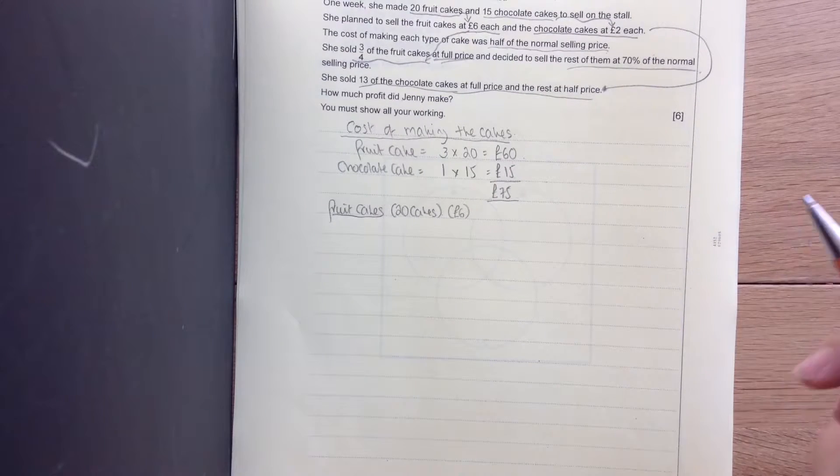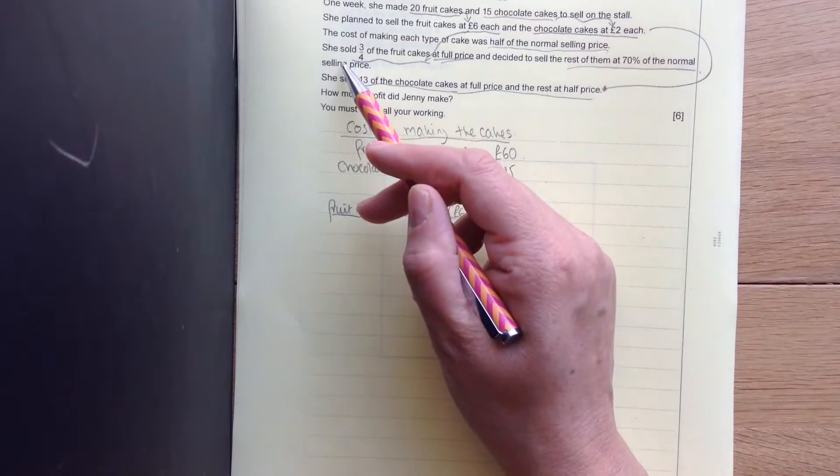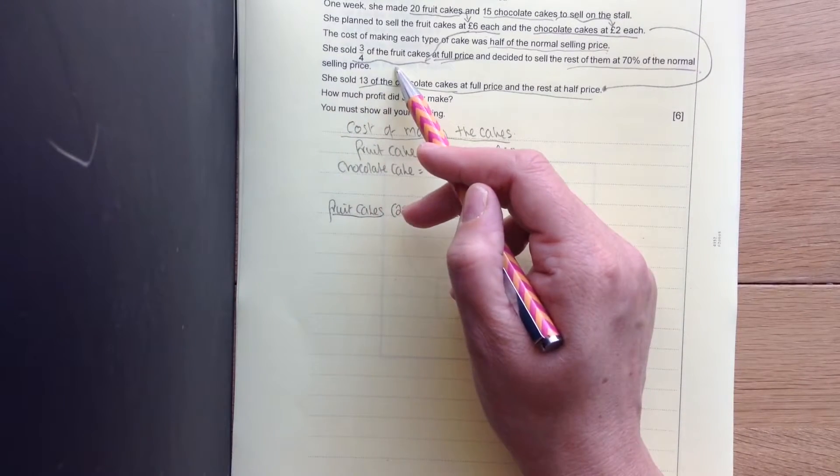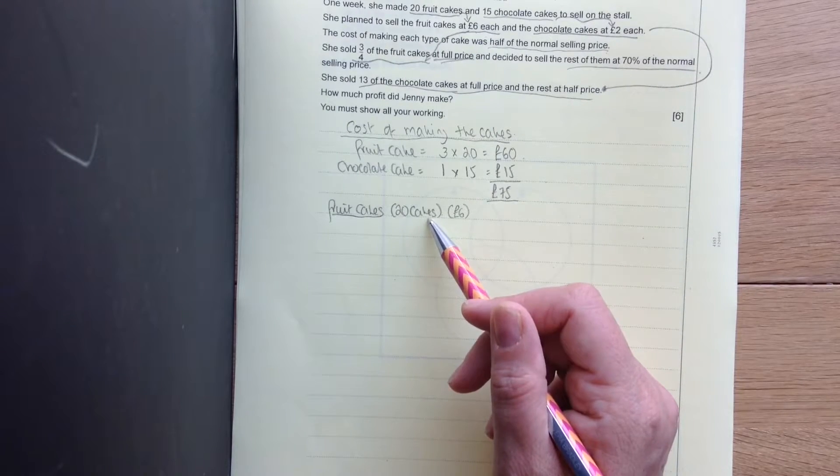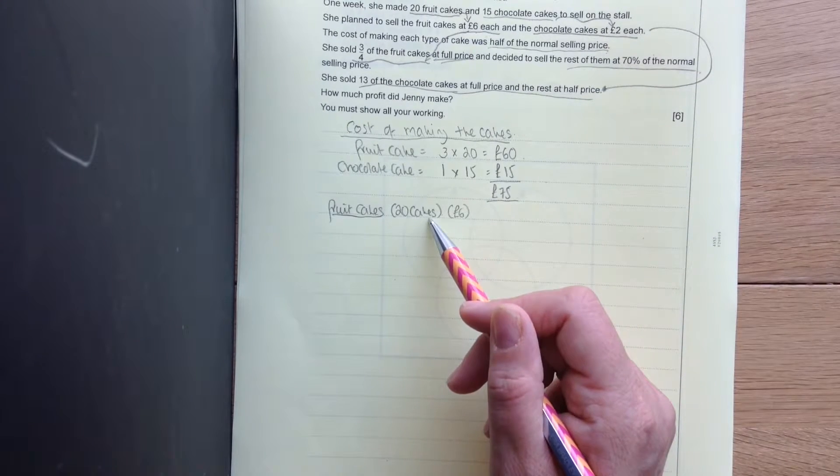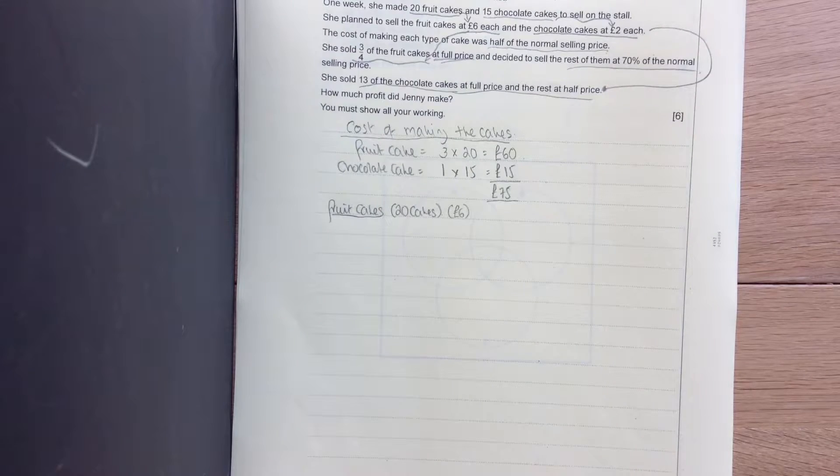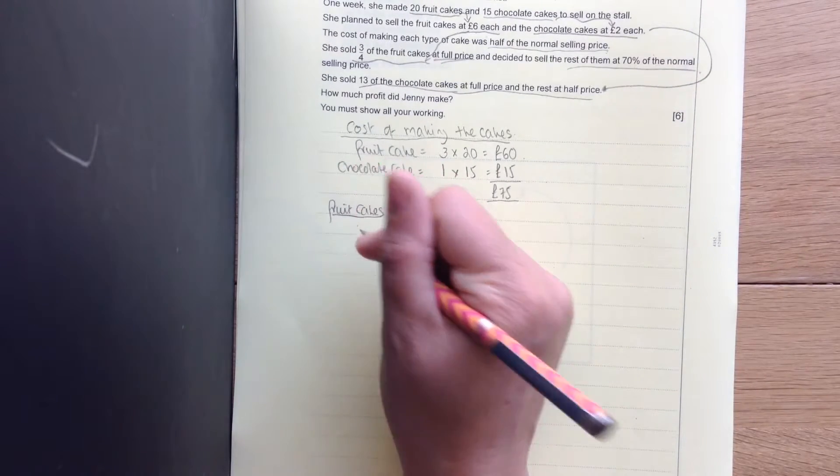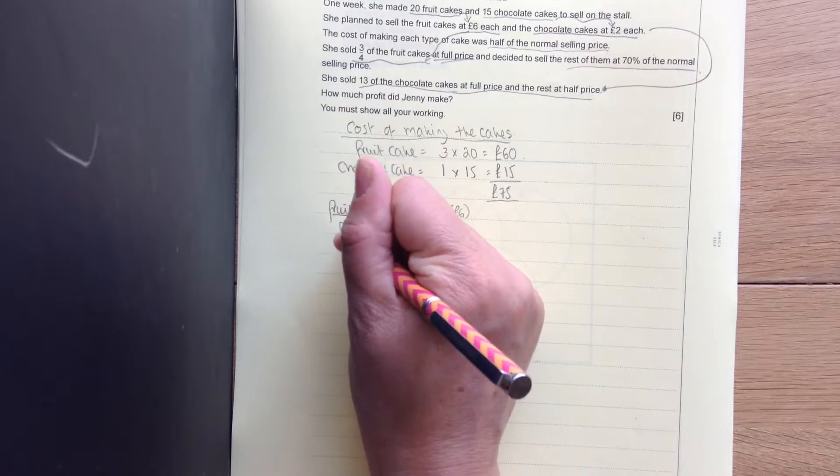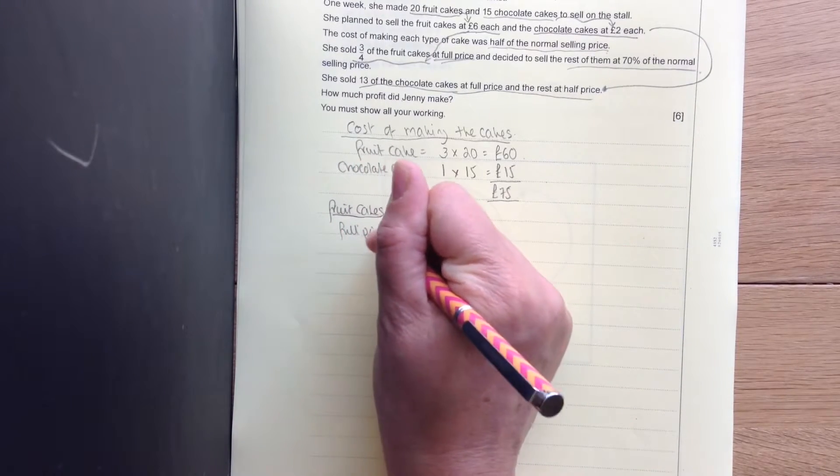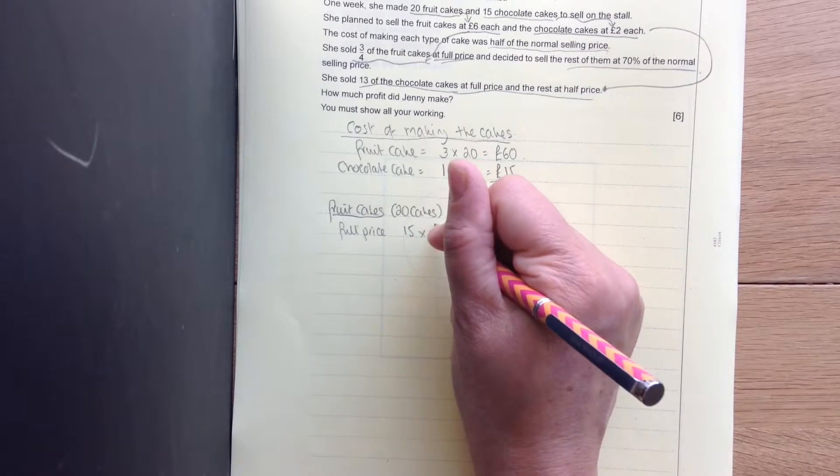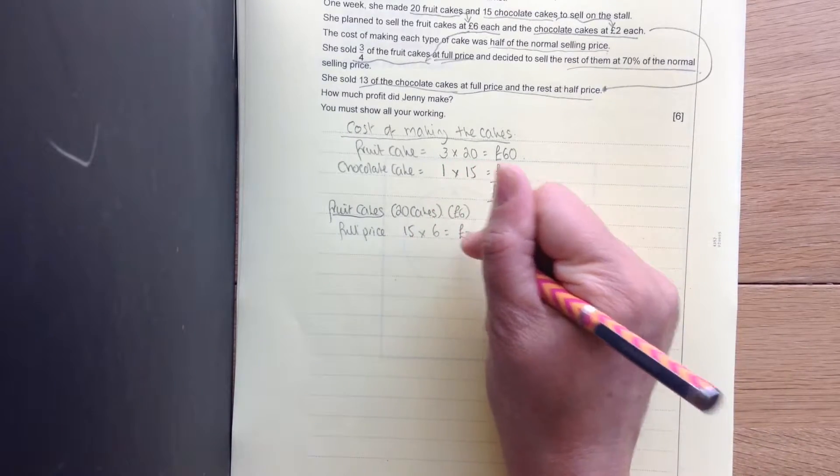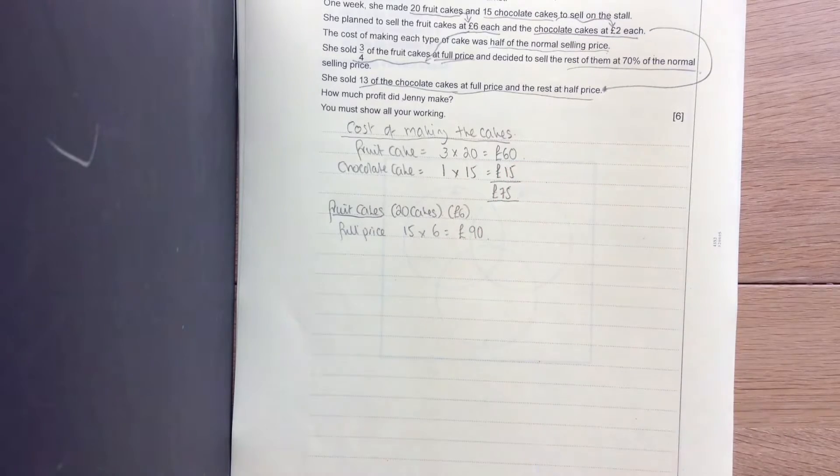So I'm going to put that information there to help me to remind me what I'm doing. It says that she sold three quarters of the fruit cake at full price. We had 20 cakes and she sold three quarters of them at the full price. So three quarters of 20 is 20 divided by 4 times by 3. So she sold 15 cakes at full price. 15 times £6, which is £90.